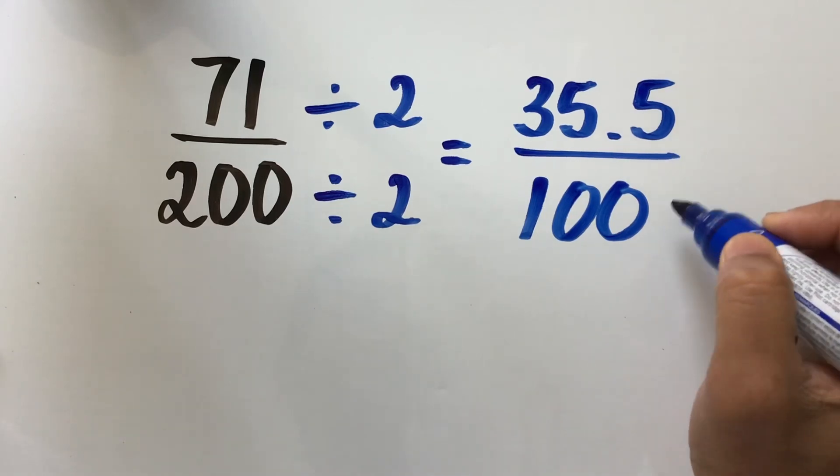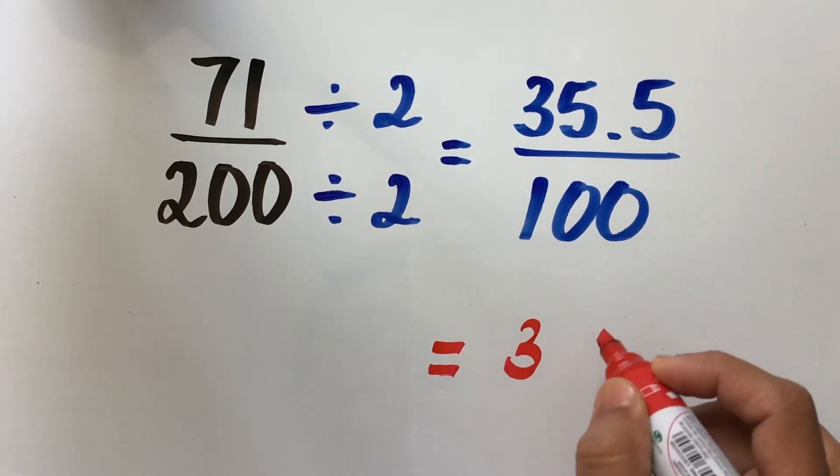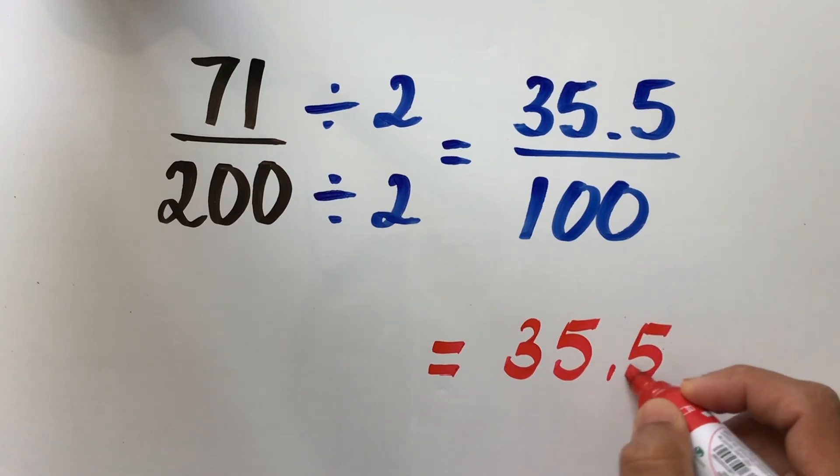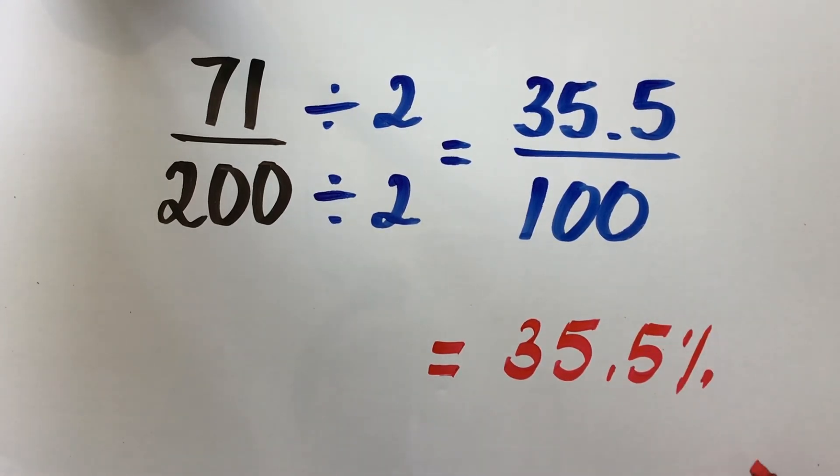Here we go, we have 35.5 percent and we could write it as a percentage, 35.5 percent. So, 71 over 200 is same as 35.5 percent.